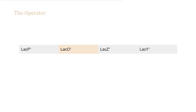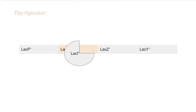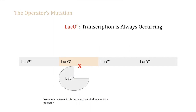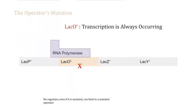Finally, we have the operator. As mentioned earlier, the operator is where the regulator protein binds to. The mutated operator prevents the regulator protein from binding. What is important to note is that both the mutated and wild-type regulators can never bind to a mutated operator, because the operator's binding site for regulators is too messed up for the regulators to secure themselves to. If no regulator can bind to the operator, then RNA polymerase is always going to be able to bind to the promoter and transcribe the structural genes.